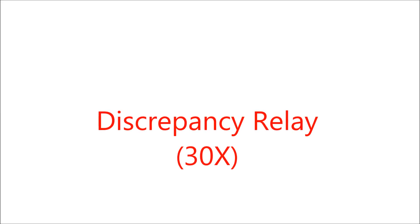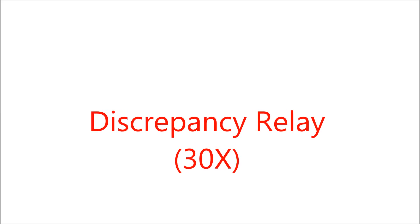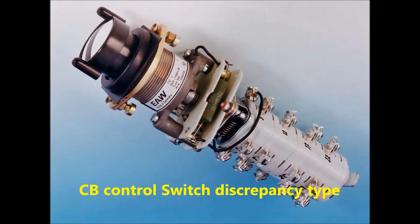Discrepancy relay in NC code is represented as 30x. In 132 kV and above voltage level, normally discrepancy type control switches are used in the panel for control circuit breaker. The image shows a discrepancy type control switch.